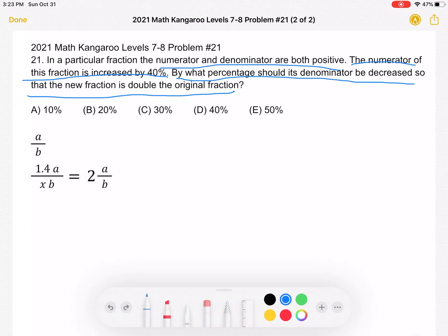we can cancel out the A over B on both sides and we'll get 1.4 over X is equal to 2. We can cross multiply to get 2X is equal to 1.4 and then divide by 2 on both sides to get that X is equal to 0.7.